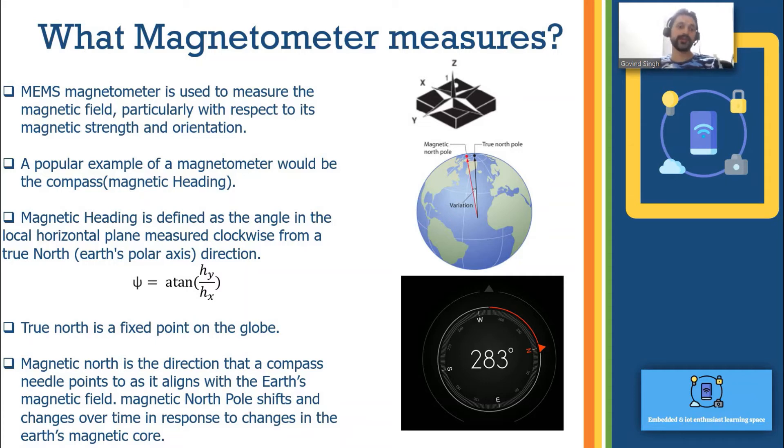We have magnetic north and we have true north. True north is a fixed point in the globe. In this globe true north is the fixed point. However magnetic north is not fixed. It keeps on changing.